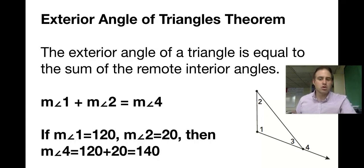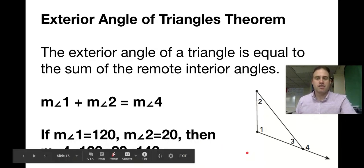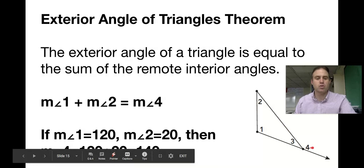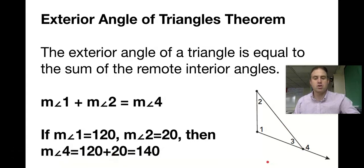As an example, if the measure of angle one is 120 and the measure of angle two is 20, then the measure of angle four is 140, because 20 + 120 = 140.